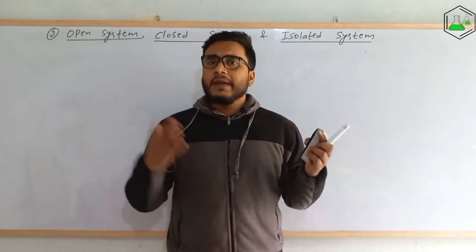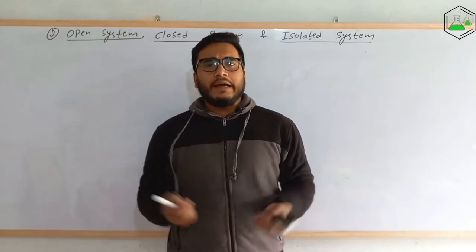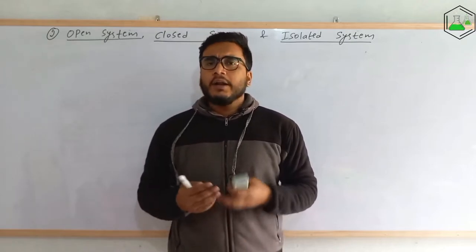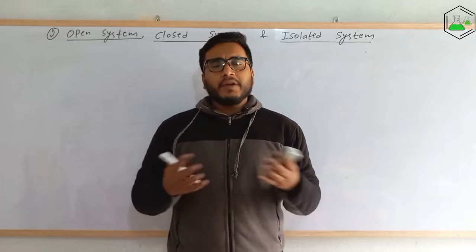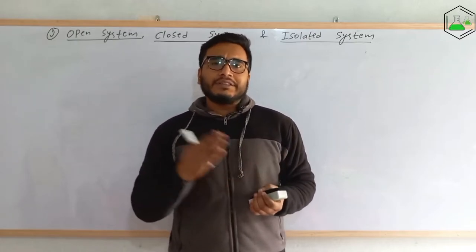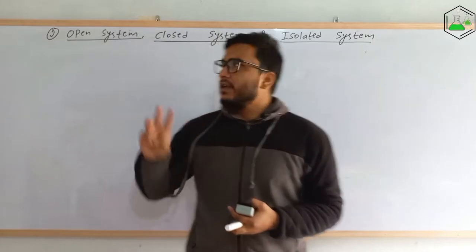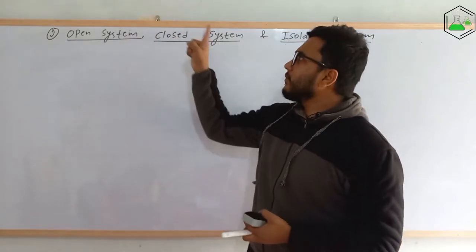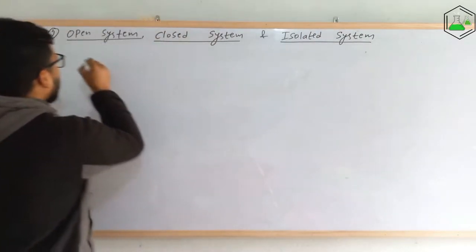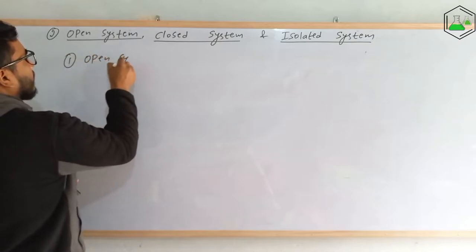We already know a system and surrounding is separated by a boundary, and the boundary is of different types — they may be permeable boundary, adiabatic boundary, or diathermal boundary. Because of that, matter and energy can be exchanged between the system and the surrounding. On the basis of that, there are three types of systems: open system, closed system, and isolated system. Let's understand them one by one.